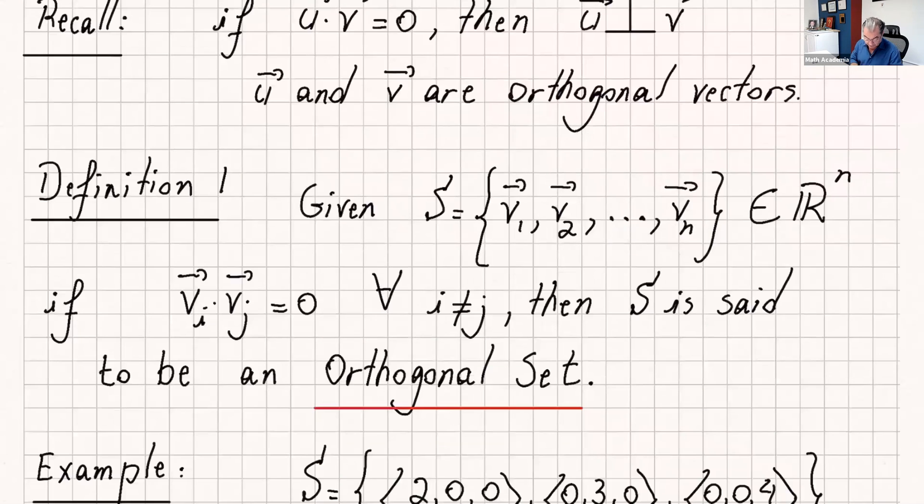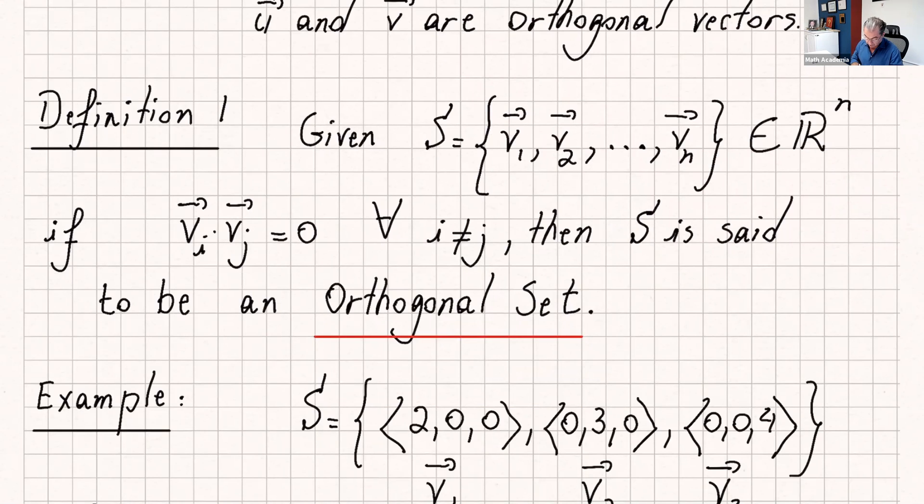Now the first definition, let's go over orthogonal sets. If you have a set of vectors in R^n, if you do the dot product of each vector for all i and j not the same, for example v1 dot v2, v1 dot v3, v1 dot vn, and the same with v2, v3, and you get zero for all of them, then you say this set S is an orthogonal set. That means all the vectors in the set are orthogonal to each other.